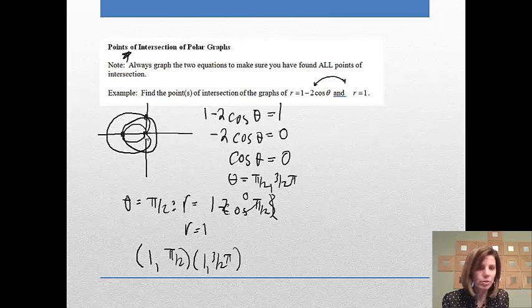And, well, actually there's no point of intersection right there. The point of intersection was down here, sorry. Cross that one off. The other one was 1, 3 pi over 2, which is down here. So notice we found two points of intersection. We are missing the third point of intersection. So that's why I said we always want to graph them to make sure we found all points.